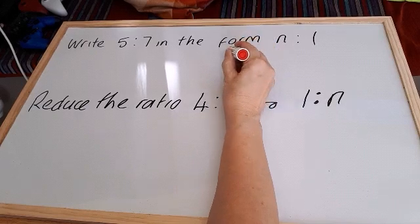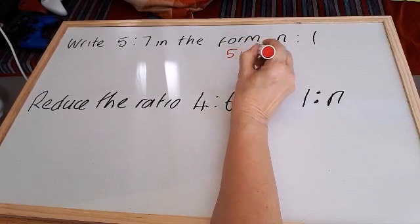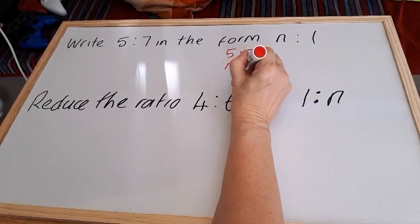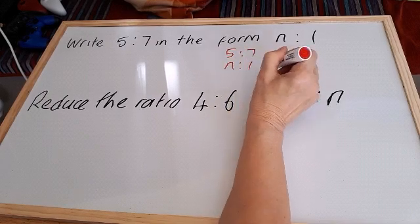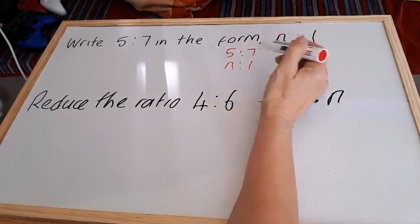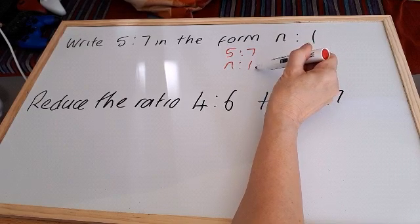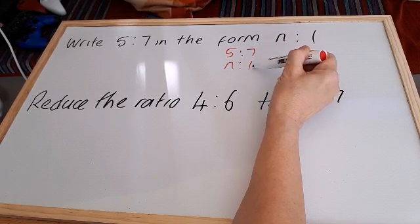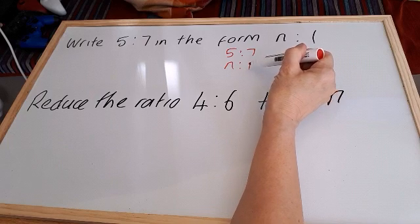So we'll write 5 to 7 and then we'll write n to 1 underneath. We've got our colons there and we know that 5 to 7 has to be in the form n to 1. So we already know what we want on the right side. We want a 1.